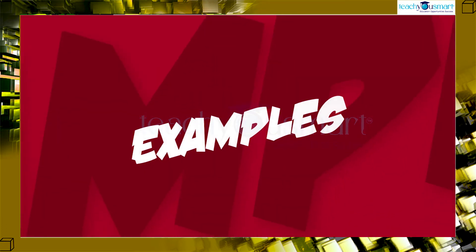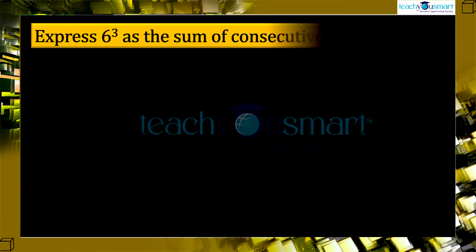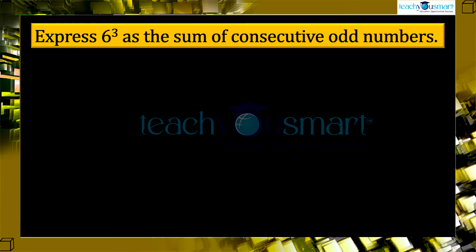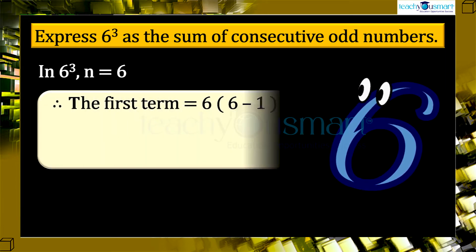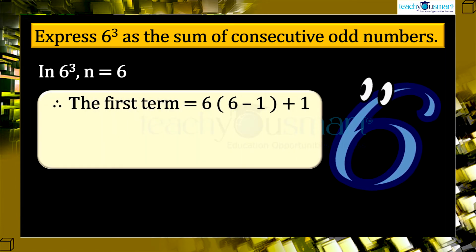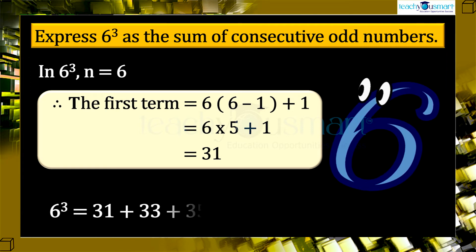Let's see some examples. Express 6 cube as the sum of consecutive odd numbers. In 6 cube, n equals 6. The first term will be 6 multiplied by (6 minus 1) plus 1, equals 6 multiplied by 5 plus 1, equals 31. We can express 6 cube as the sum of 6 consecutive odd numbers starting from 31. That is, 6 cube equals 31 plus 33 plus 35 plus 37 plus 39 plus 41.